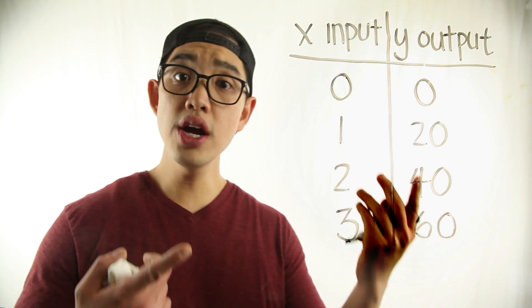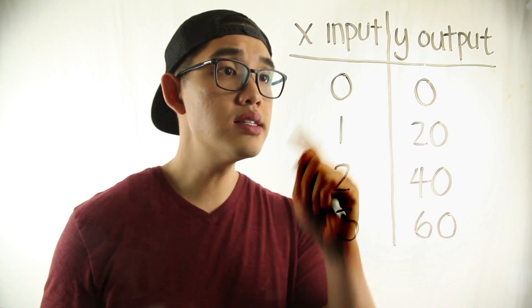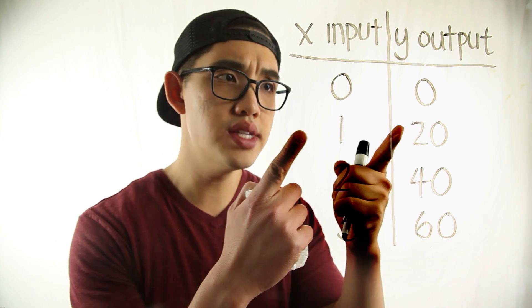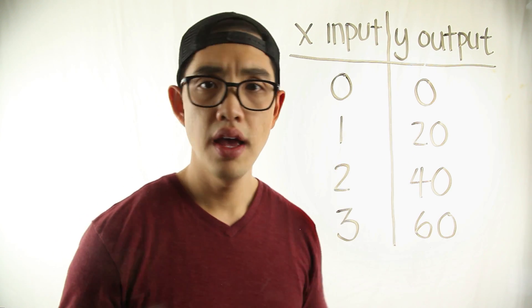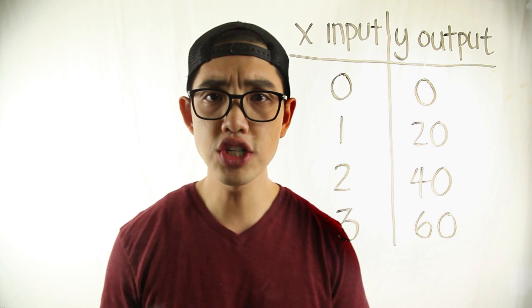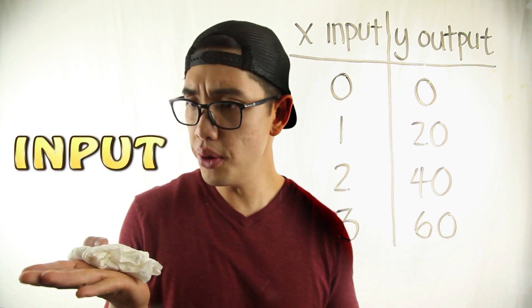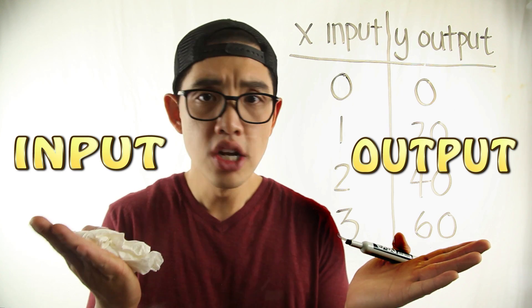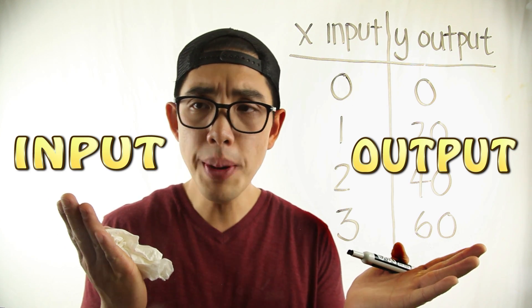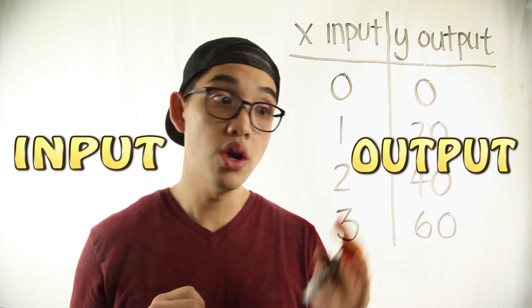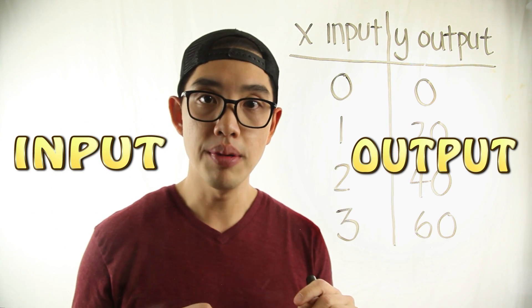And there you have it. This is a function, so that whenever you put in an input there is an output. Again, a function is basically a relationship between an input and an output so that whenever you put in one input, there is exactly one output.